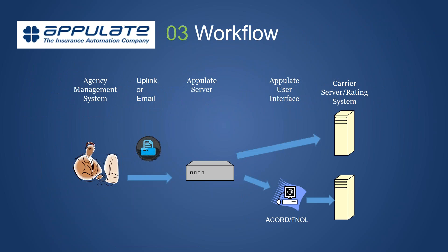There are two different types of workflows — one from an internal perspective and one from an external perspective. The external workflow starts from a management system: they print the Accord form to the Appulate Uplink, and all the information — Accords and first notice of loss — gets taken to your system, whether that's your back-end system, your portal, or your policy admin system. Alternatively, if you don't want their workflow to change, they can email you the Accord forms, and you can use Uplink through your back-end system internally.